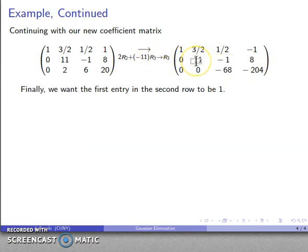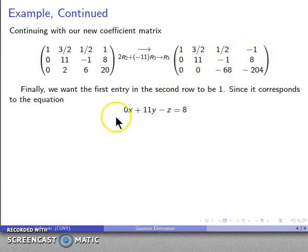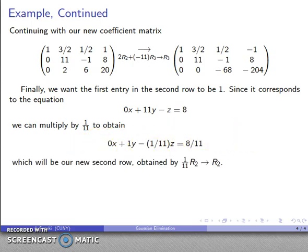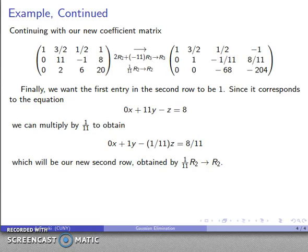Finally, I want the leading entry in the second row to be 1. The second row corresponds to 0x plus 11y minus z equals 8. To make the first non-zero entry 1, I need to make the 11 into a 1 by multiplying by one-eleventh. This gives a new second row, and the row operation is: (1/11)r2 → r2. There's my next set of row operations.